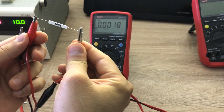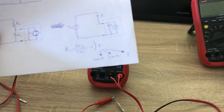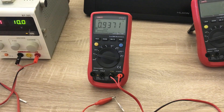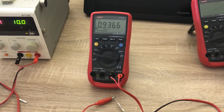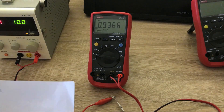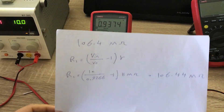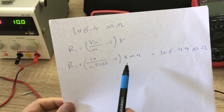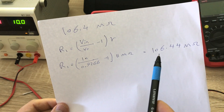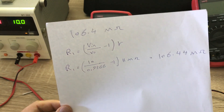I apply 10 volts from the bench power supply. The voltmeter reads 0.936 V, which is below 2.2 V, so I use 11 megaohm as the internal resistance. Plugging into the formula gives 106.44 megaohm — which matches the direct multimeter reading of 106.4 megaohm very closely. Our method is validated.